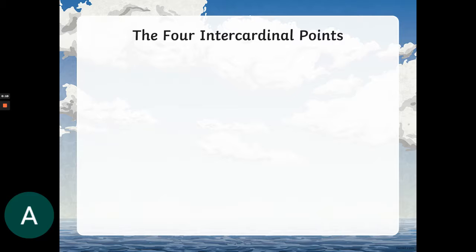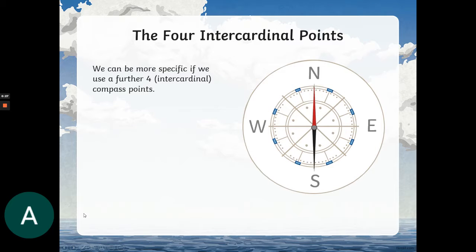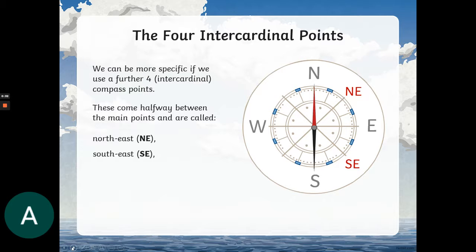Intercardinal is a very posh word and it means the bits in between north, east, south and west. So north, east, south and west are the main points but we have another four and they each sit between those main four and they are known as north-east, south-east, south-west and north-west. There they are in red. So they sit in between each of the main four points.